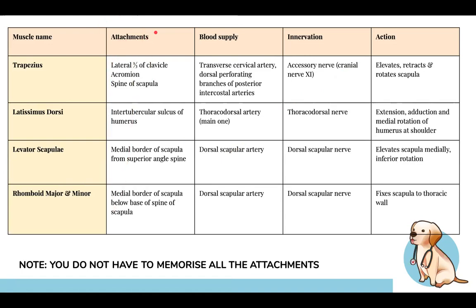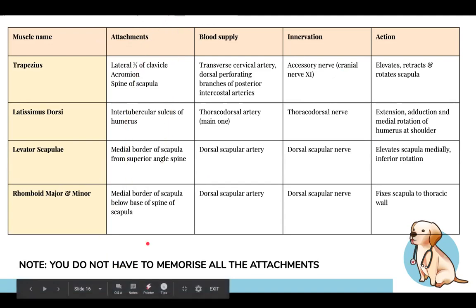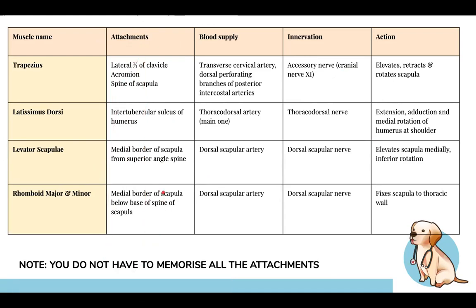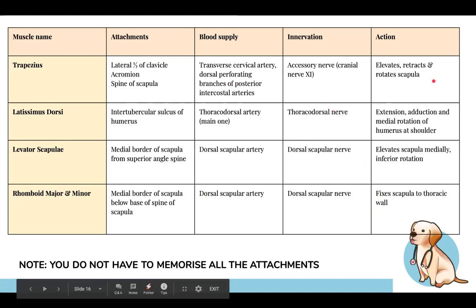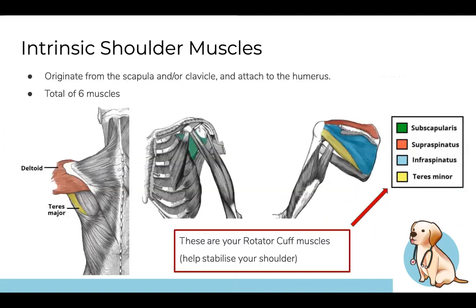The anatomy workbook outlines everything you need to know. The table covers attachments — broken into origins and insertions. Origins come from the spine area. Blood supply and innervation are also listed. Actions are particularly important for clinical skill tutorials. Muscles and their details, including blood supply and innervation, are all in the table for reference.